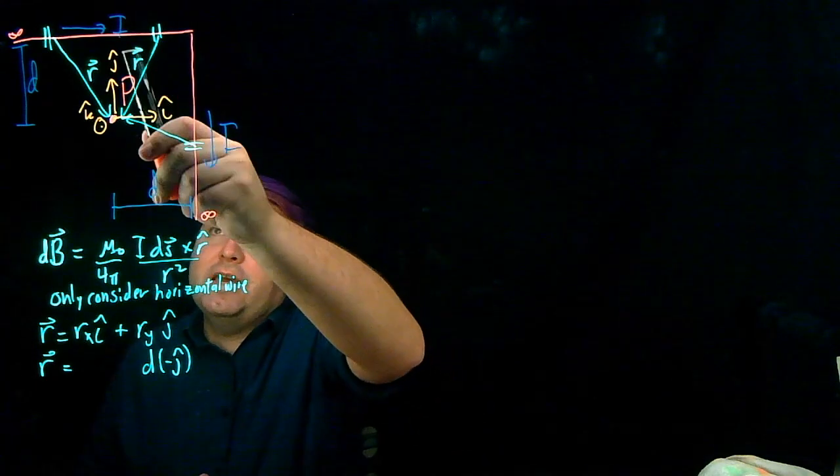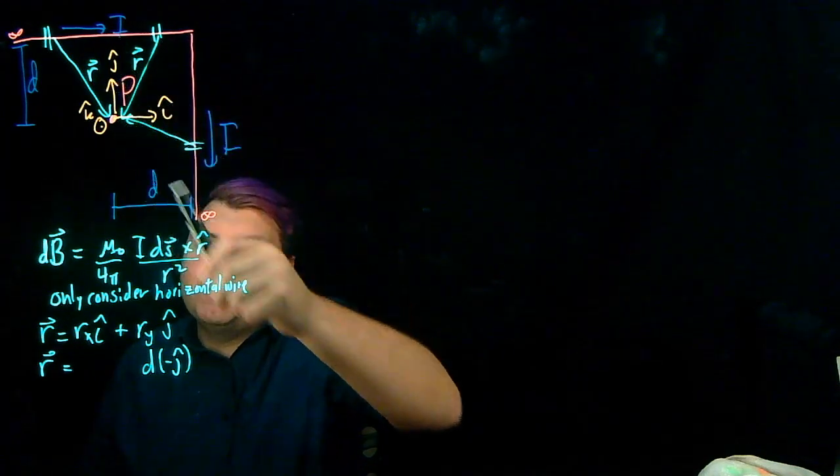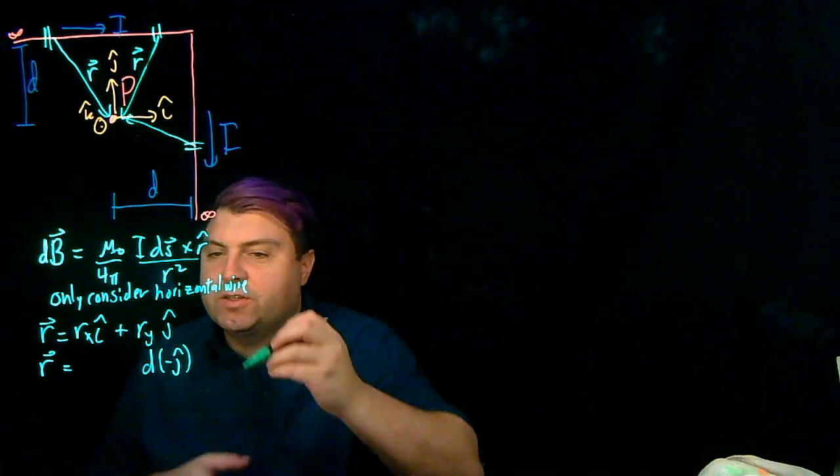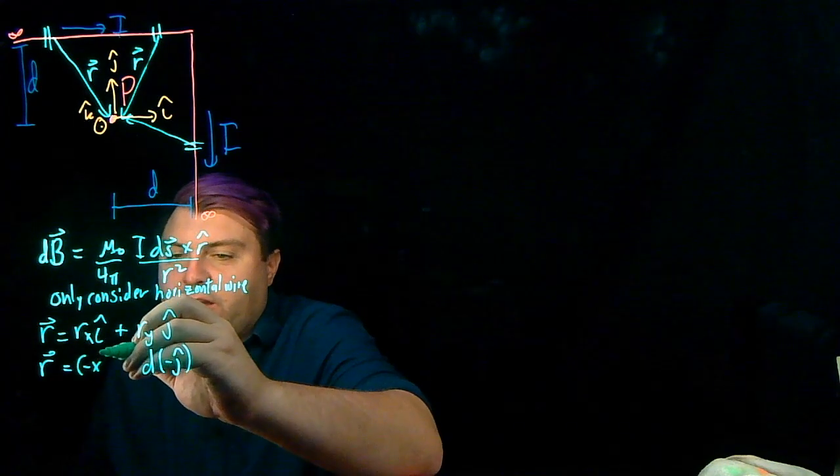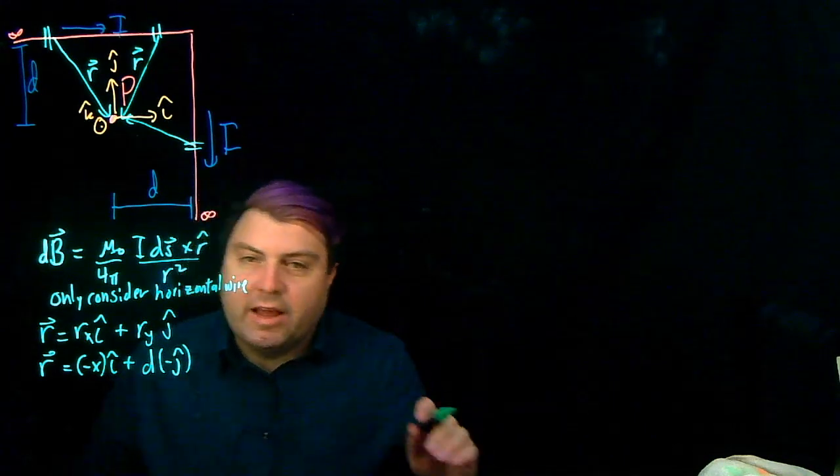So if I go in the positive x direction for the slice, in order to get back to P, I have to go back negative. So this is going to be negative x in the i hat direction. And that's our r vector.